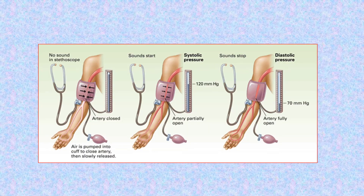In summary: inflate the sphygmomanometer cuff until no sound is heard through the stethoscope — this means the brachial artery is closed. Then begin gradual deflation until the first sound appears: this is the first Korotkoff sound representing the systolic blood pressure reading. Continue gradual deflation until the sound completely disappears: this is the fifth Korotkoff sound representing the diastolic blood pressure reading.